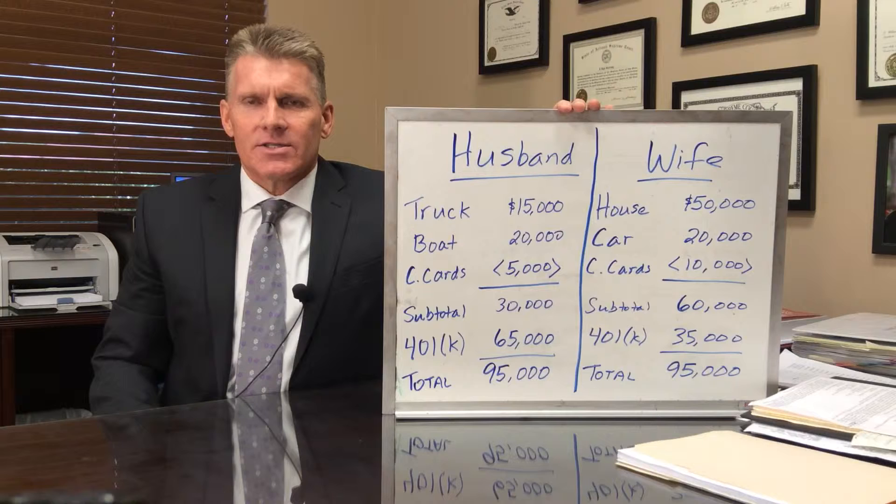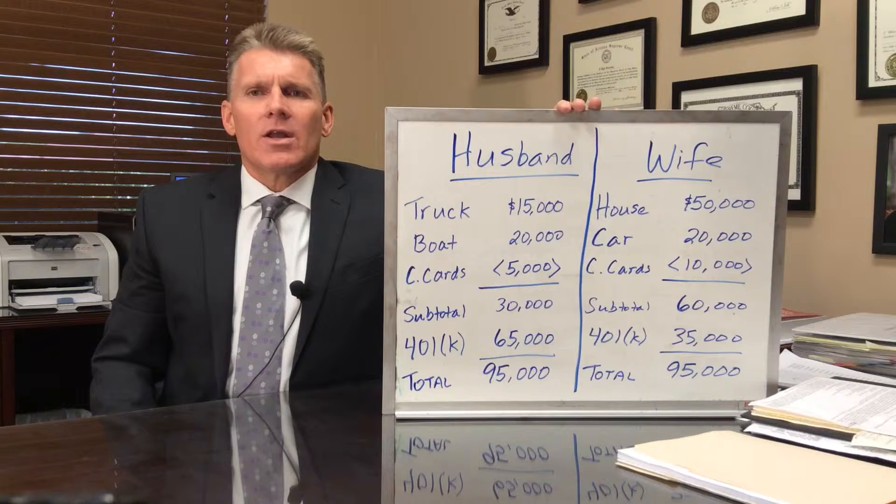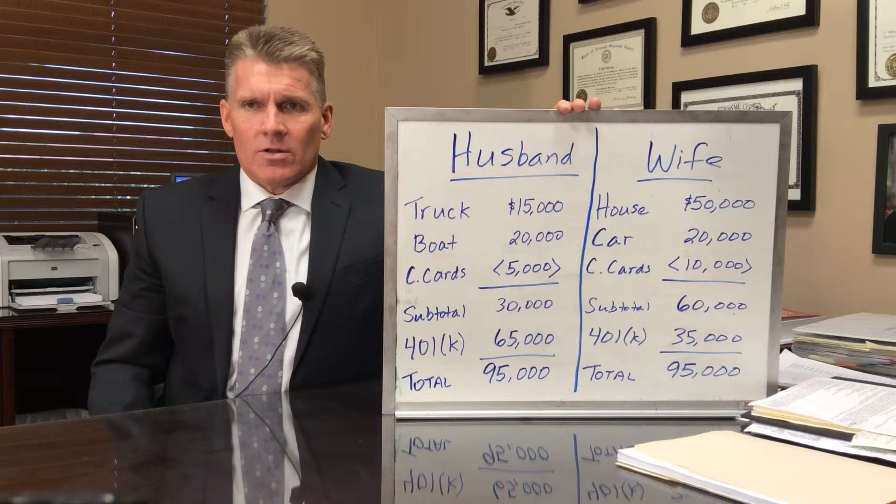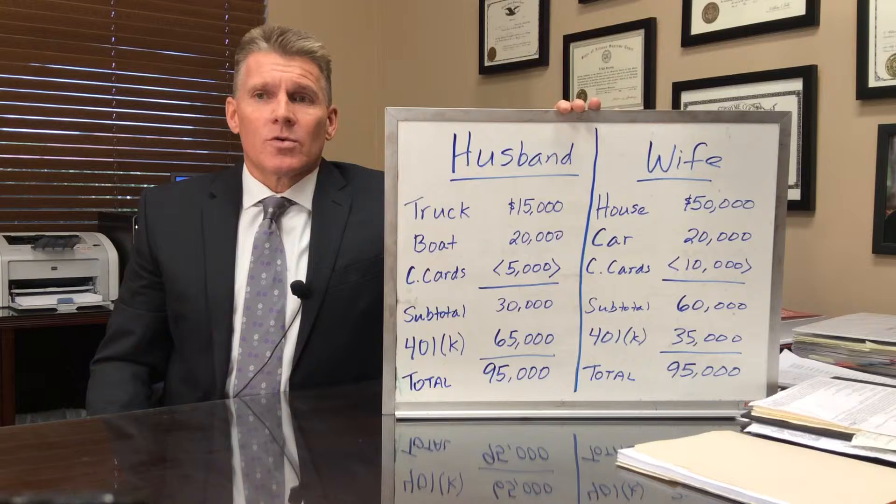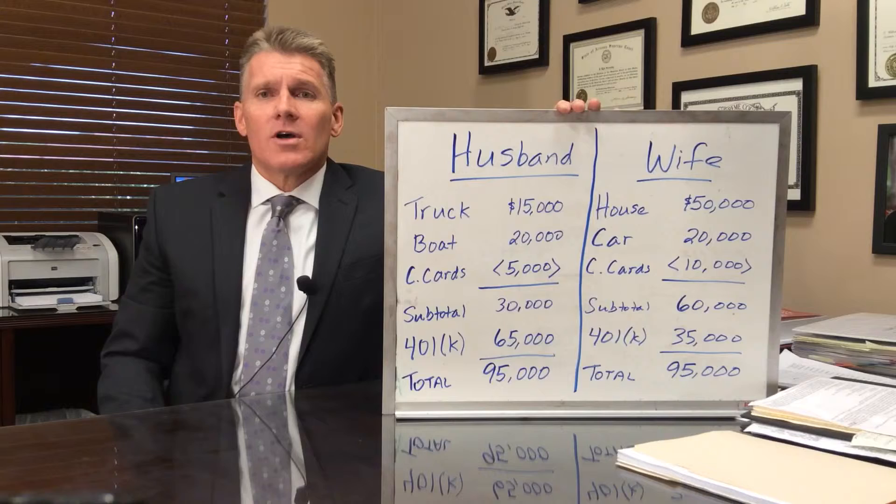In this example today, we're going to be talking about a couple that has a house with $50,000 of equity in it, a boat worth $20,000, a truck that the husband drives worth $15,000, a car that the wife drives worth $20,000, credit cards totaling $15,000, and a 401k through husband's employment valued at $100,000.